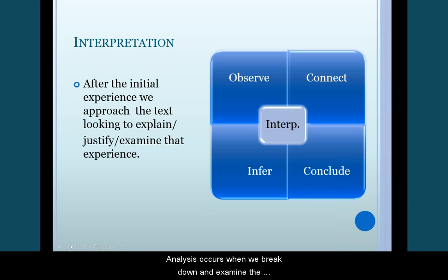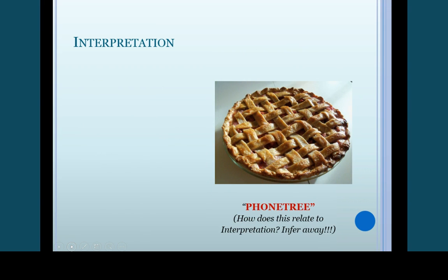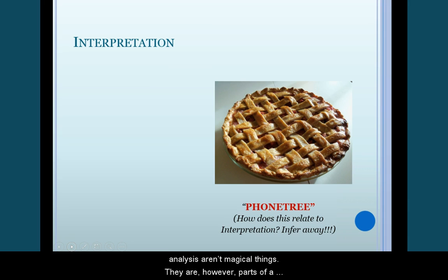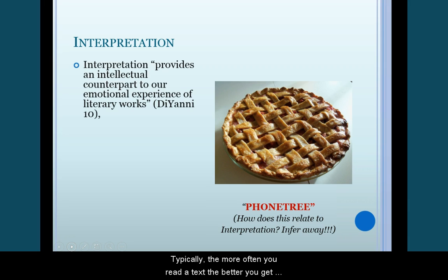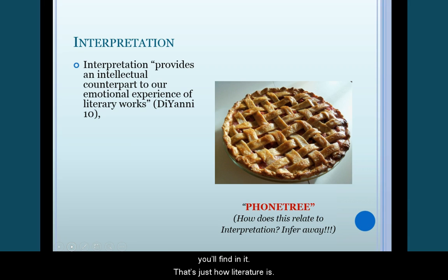Analysis occurs when we break down and examine the components of our interpretation and the text you are examining. Interpretation and analysis aren't magical things — they are, however, parts of a process that involves many small steps. Typically, the more often you read a text, the better you get at interpreting it, and the more subtle nuances and depth you'll find in it. That's just how literature is. First, however, you need a background in literary elements and devices. I will get to those in future PowerPoints.